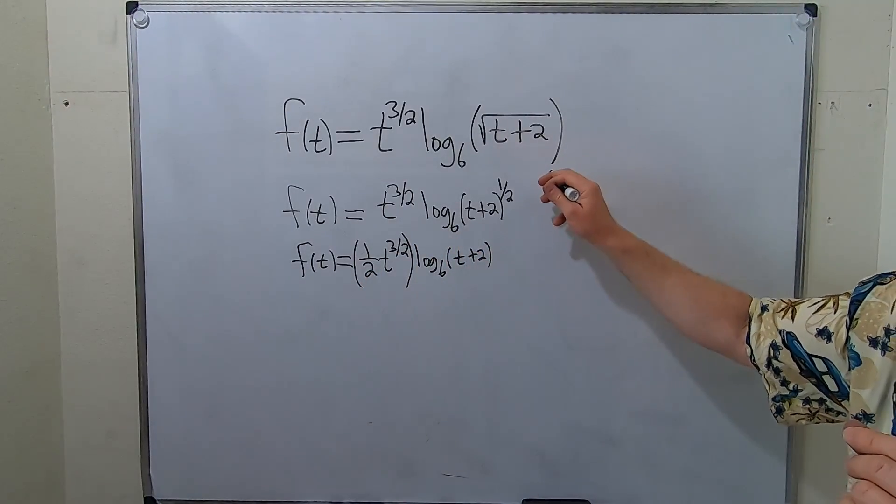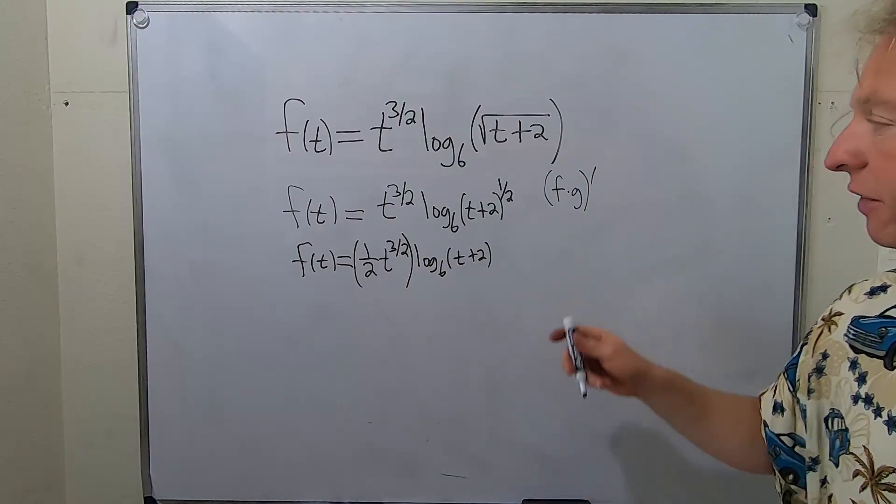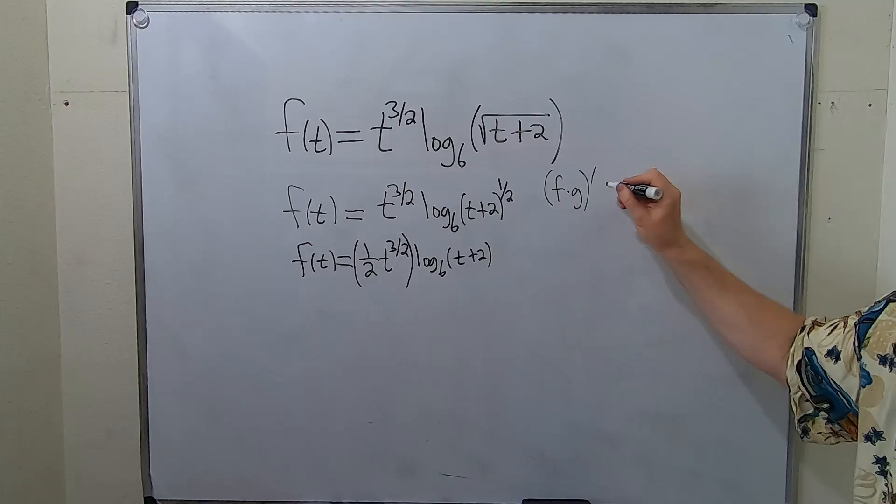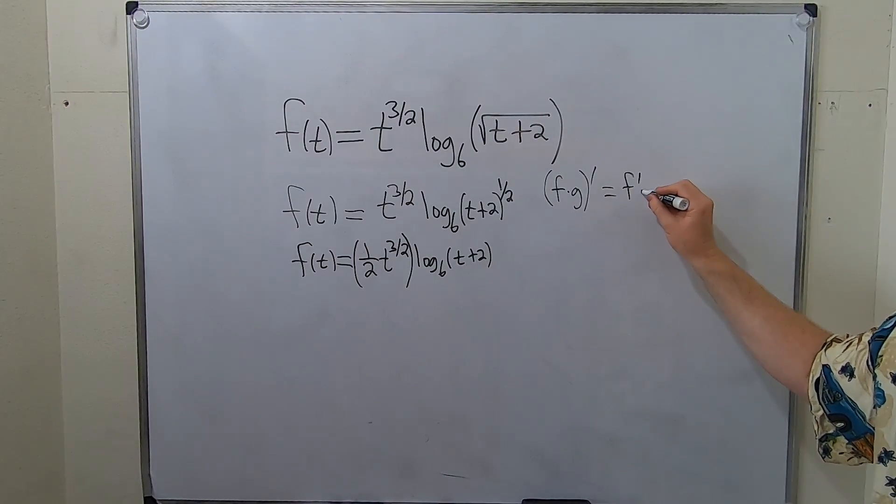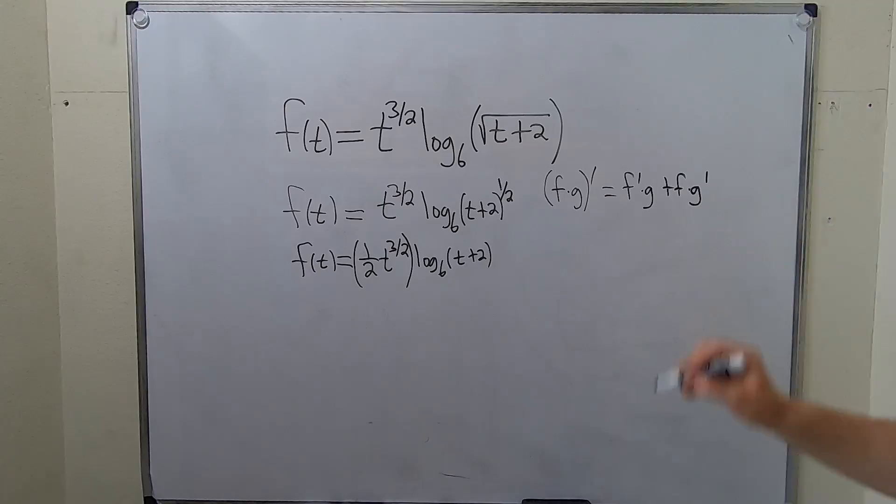Recall the product rule says, I'll write it over here, if you have the derivative of f times g, think of this as the first piece and this as the second piece. So it's the derivative of the first times the second plus the first times the derivative of the second.